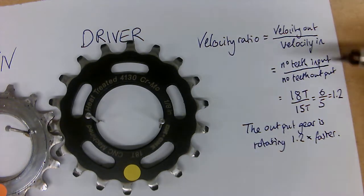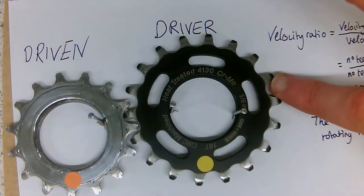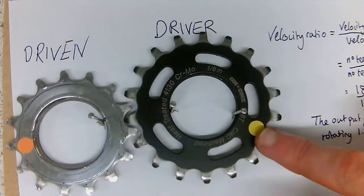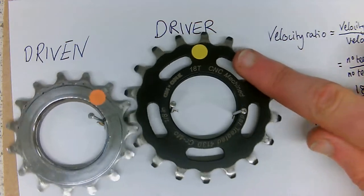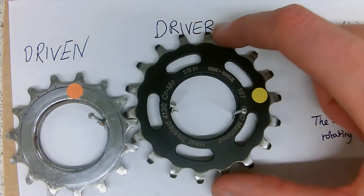So our velocity ratio here is greater than 1. And having a look at this, if we ever get a large cog pairing to a smaller cog, then we will always get the small cog turning faster, making more rotations in the same time.